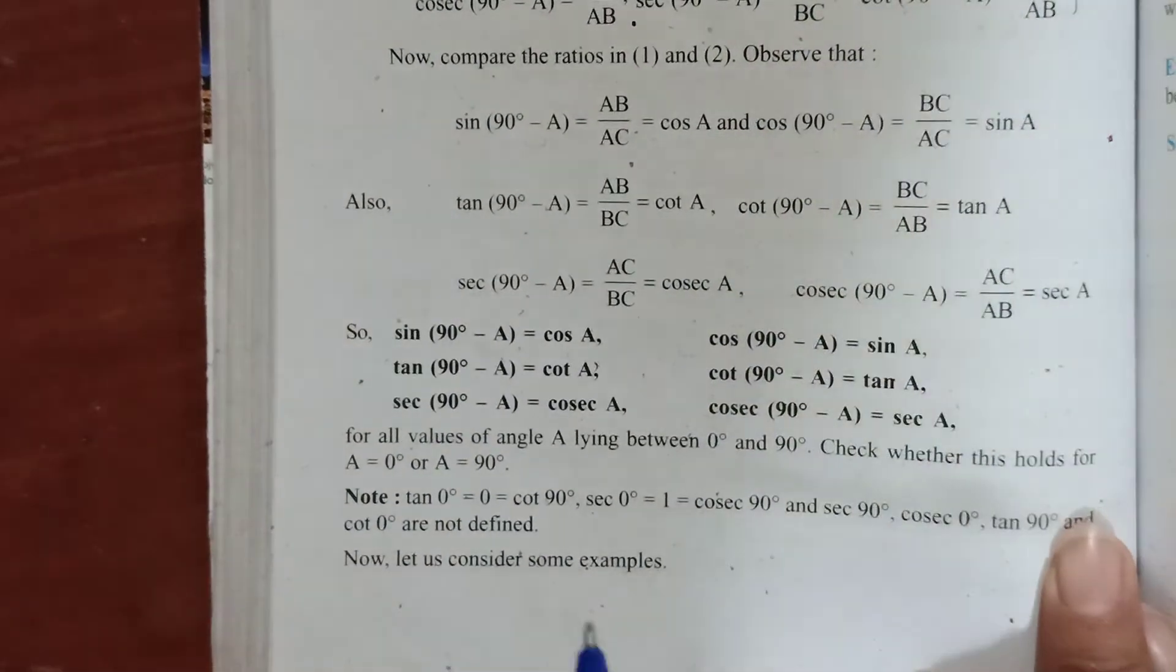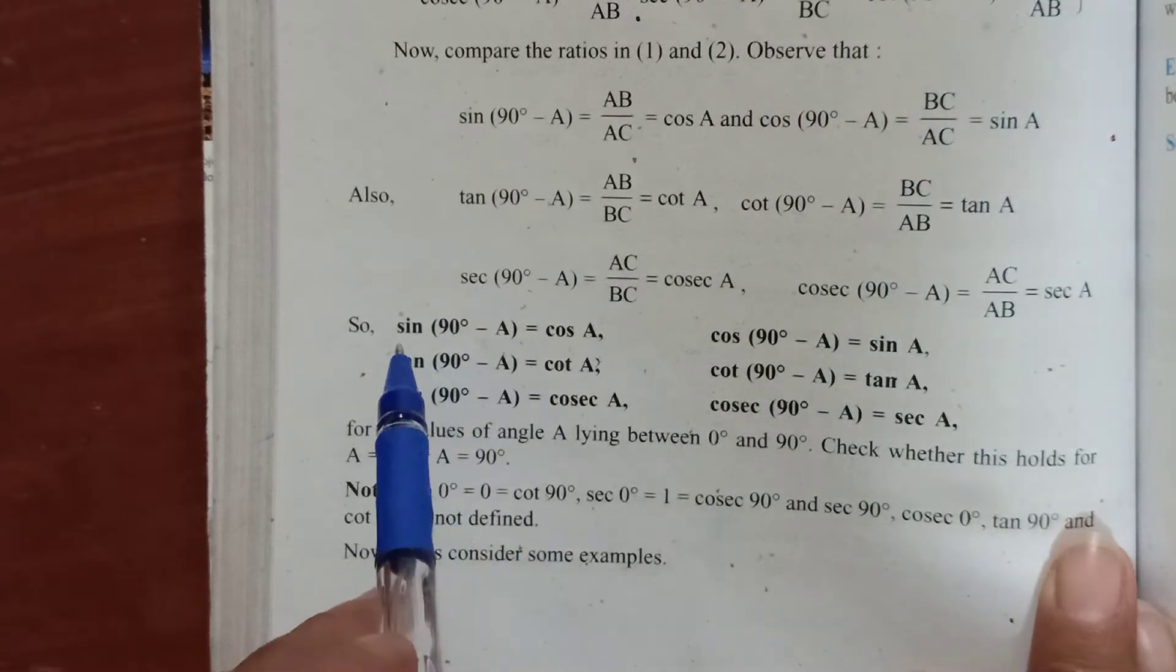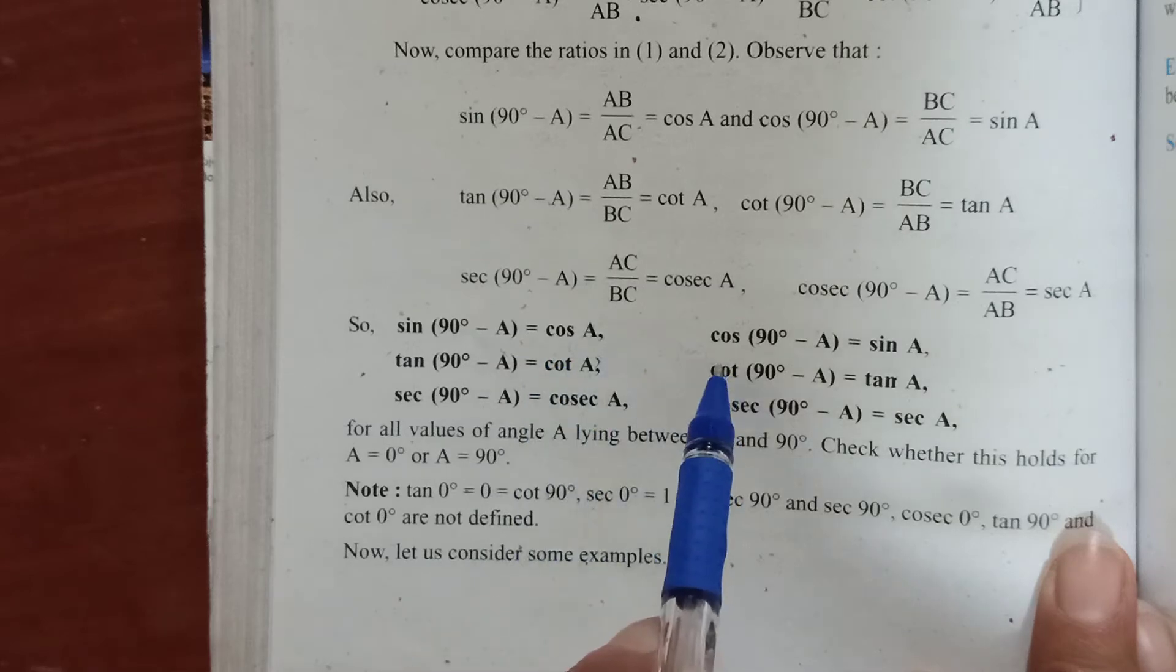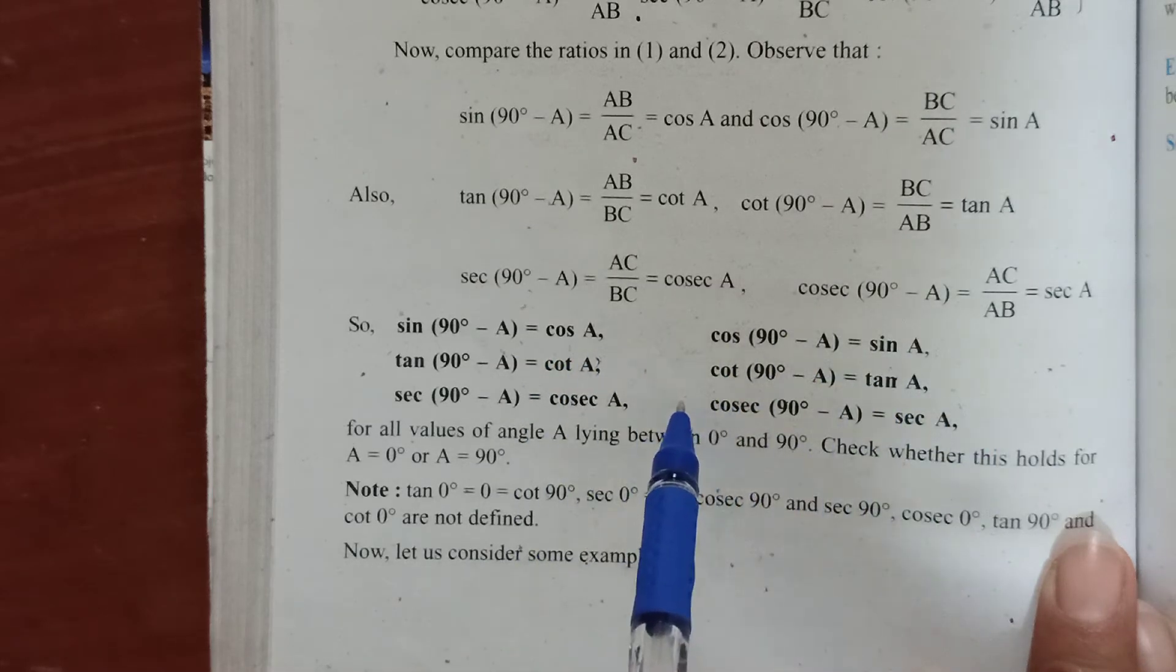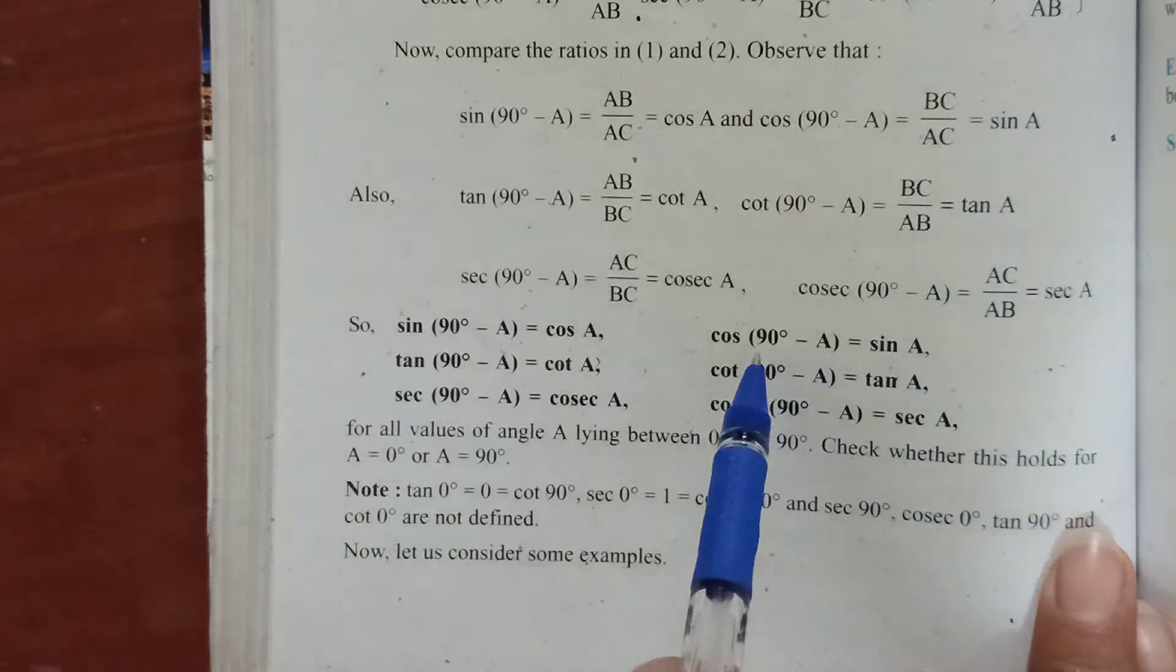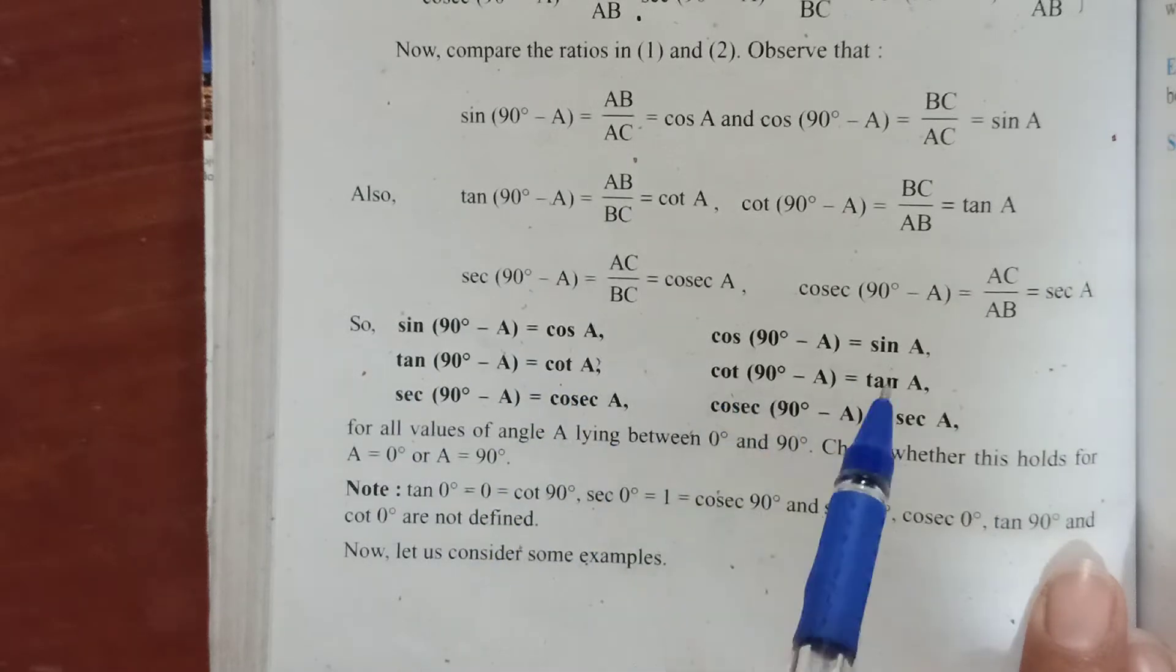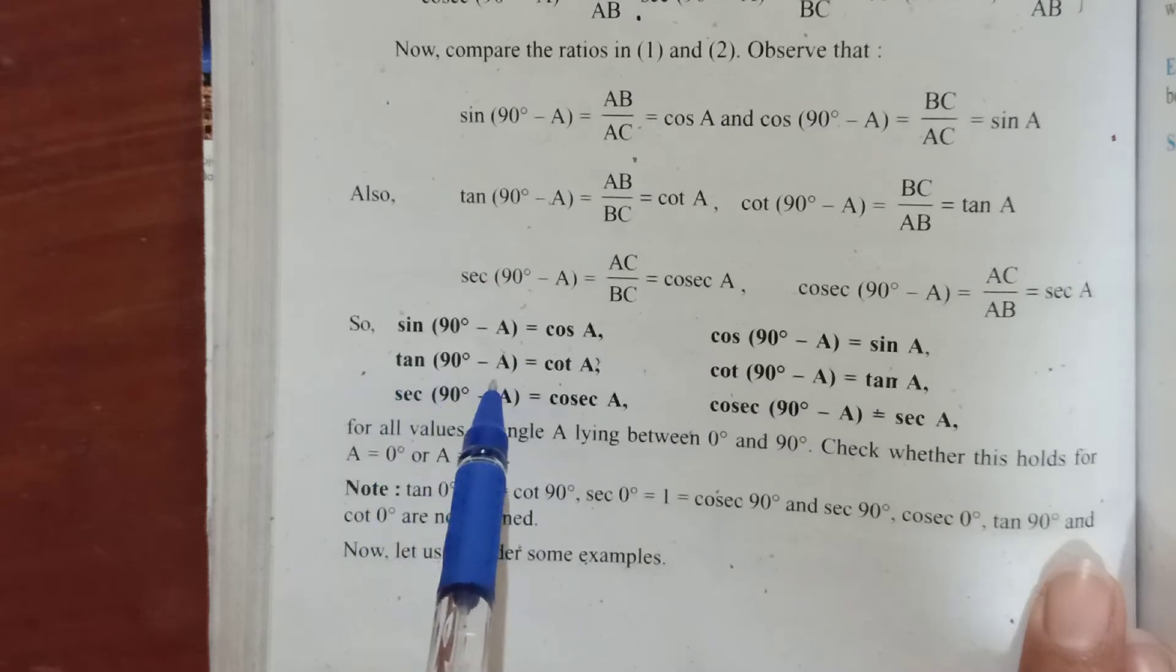Remember them as your formula or understand them. If you consider sine of 90 minus A, it becomes cos of A. Cos of 90 minus A becomes sine A. So sine converts to cos and cos converts to sine with a difference of 90 degrees when you consider complement of the angle. Likewise, tan will convert to cot, and cot will become tan with a difference of 90 degrees. So tan 90 minus A becomes cot A.